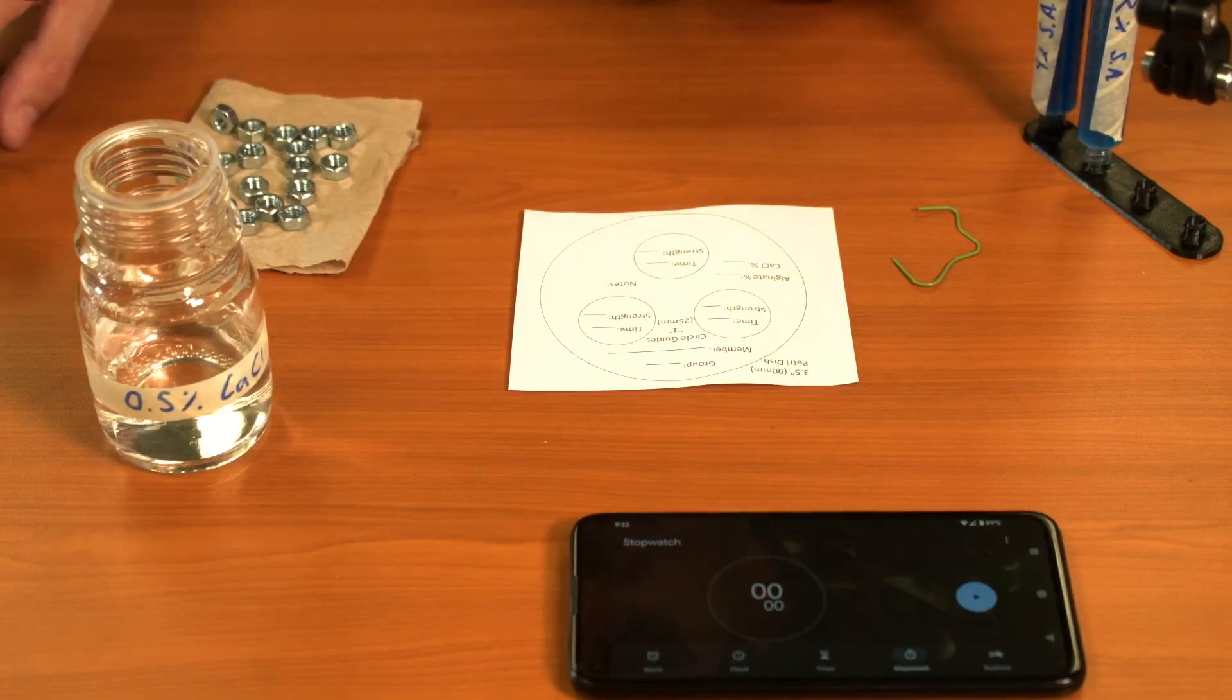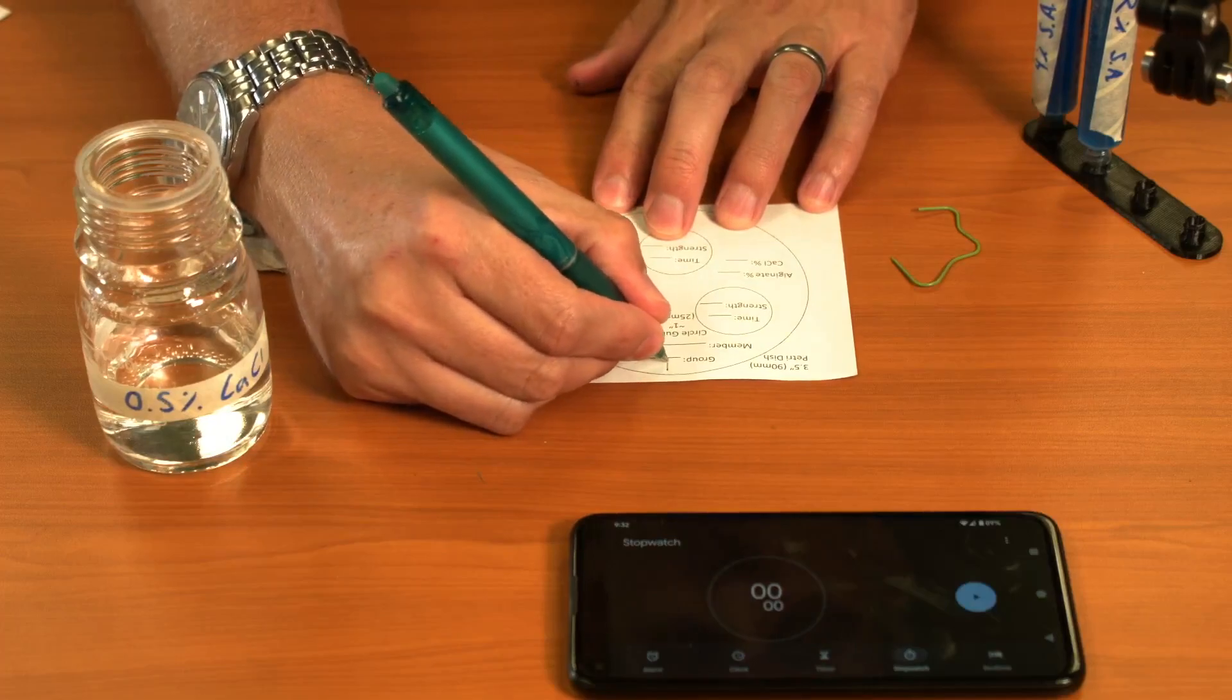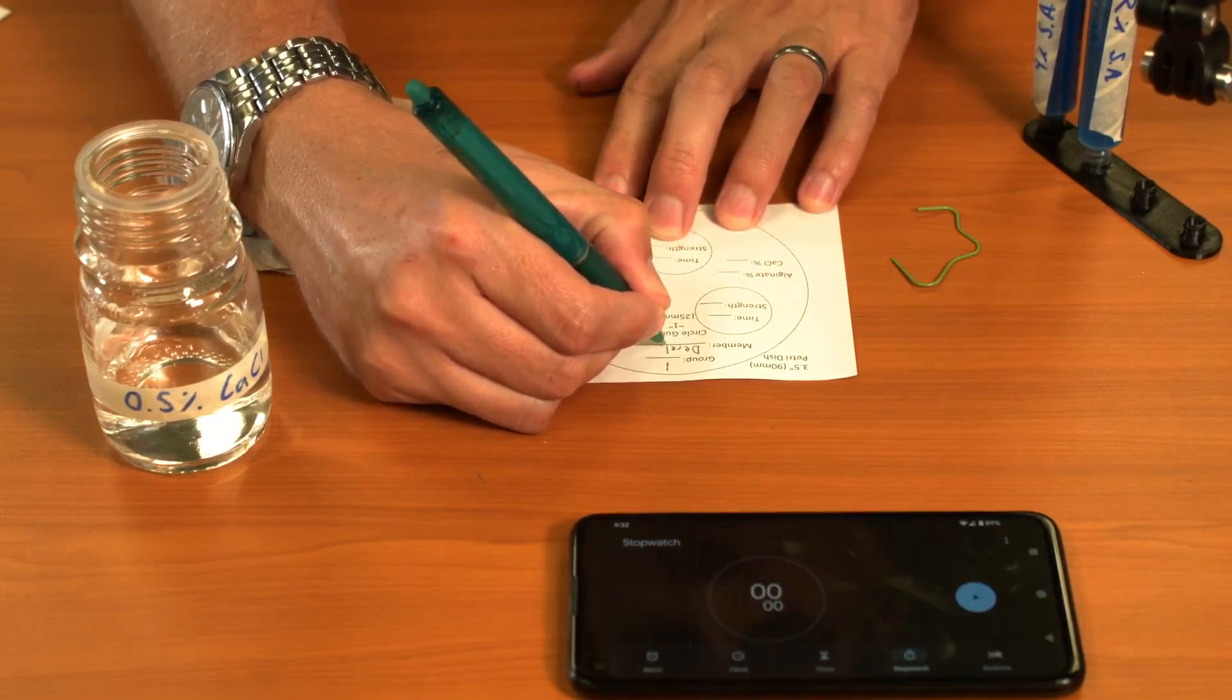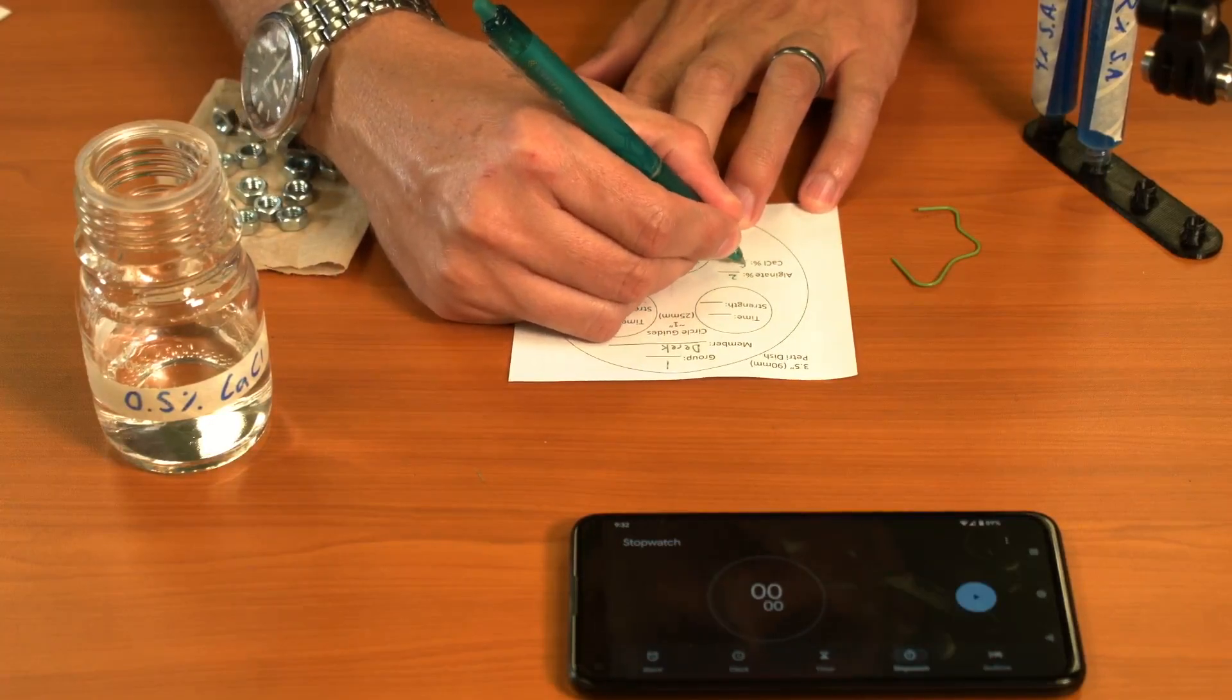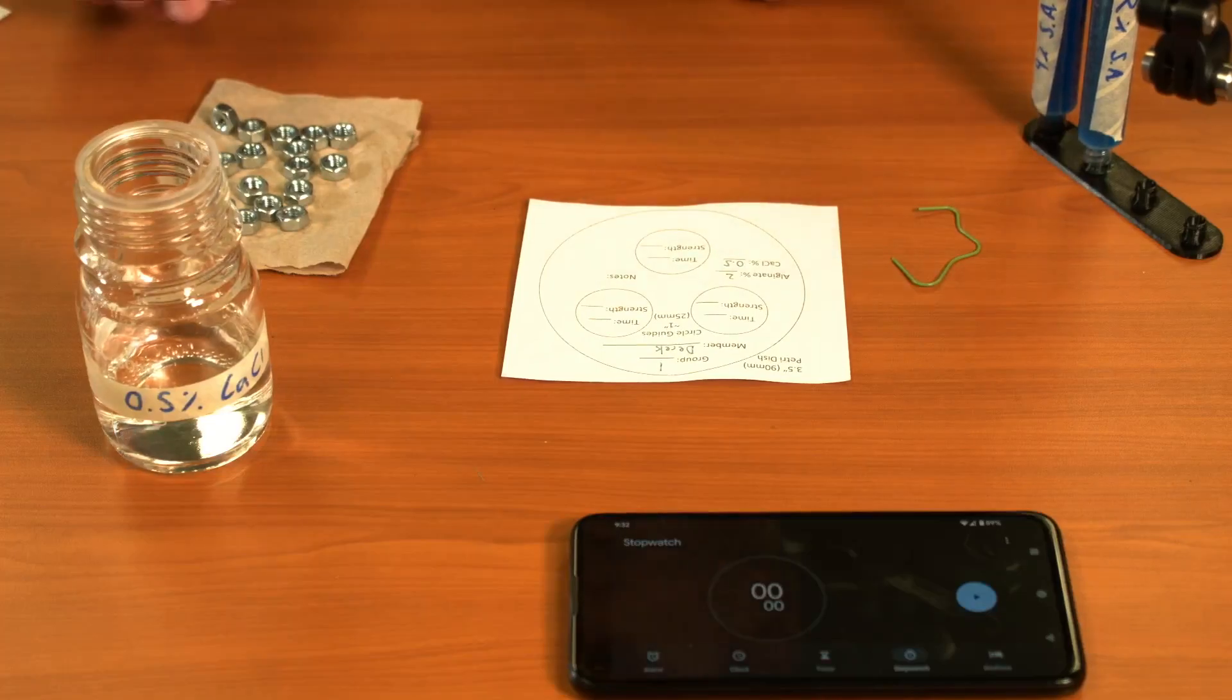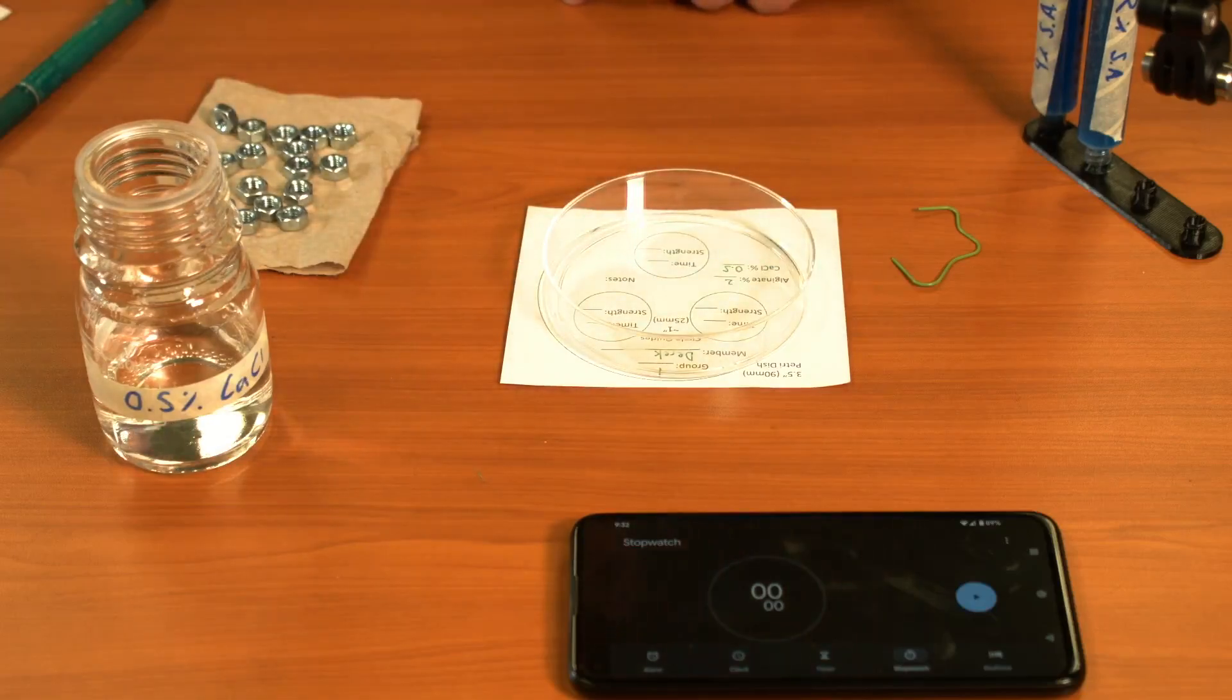The first thing I'm going to do is note that I'll make myself group one. I'm going to do a 2% alginate and a 0.5% calcium chloride. Once we've got that noted down, I'm going to take my petri dish and put it right on top of my guide.